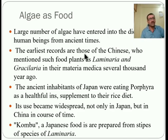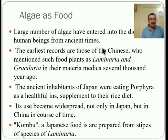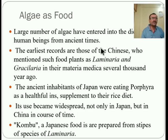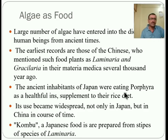The earliest records are those of the Chinese, who mentioned food plants such as Laminaria and Gracilaria in their Materia Medica several thousand years ago. Algae have great nutritious value, and ancient peoples were aware of this and consumed these algae in their daily diet. The ancient inhabitants of Japan ate Porphyra as a helpful supplement to their rice diet.